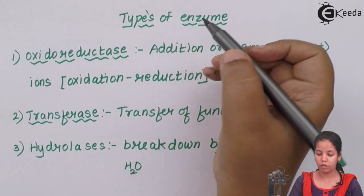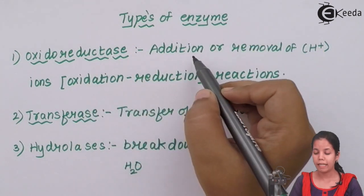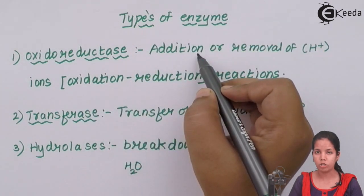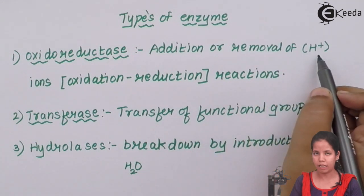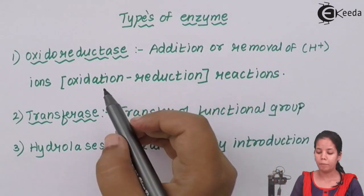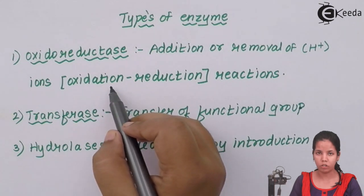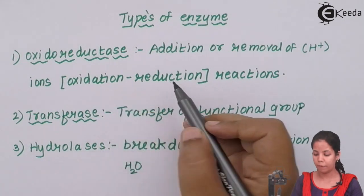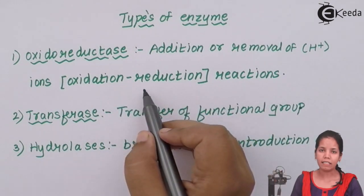The types of enzymes include oxidoreductase. This enzyme helps in addition or removal of H plus ions or hydrogen ions. Basically, oxidoreductase is involved in oxidation or reduction reaction or in ETS reaction, i.e. electron transport chain.